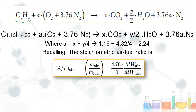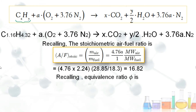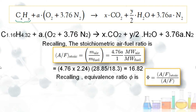Substituting all values into the formula, the stoichiometric air-fuel ratio (A/F)_stoich = 16.82. Recalling the equivalence ratio formula: φ = (A/F)_stoich / (A/F).